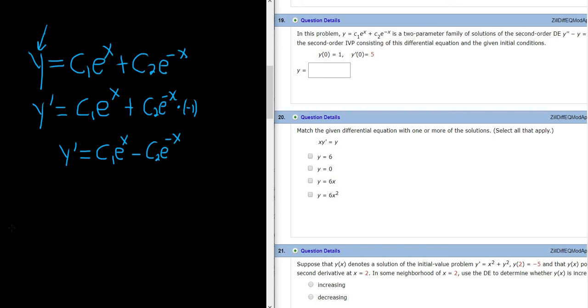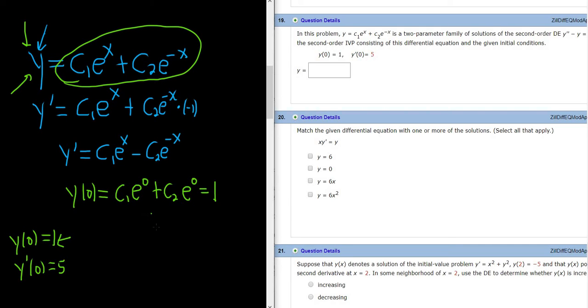All right, let's use our conditions. I'm going to go ahead and write them down here so we have them. So y of 0 equals 1 and y prime of 0 equals 5. So let's use our first condition. When we use this condition, we have to look at this one here. So it'd be c1 e to the 0 plus c2 e to the negative 0, and this is equal to 1. e to the 0 is 1, so we just get c1 plus c2 equal to 1.